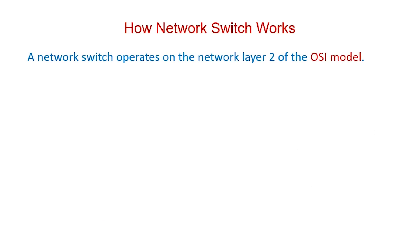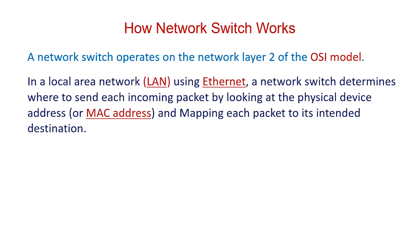A network switch operates on network layer 2 of the OSI model — we will cover what the OSI model is in later videos. In a local area network using Ethernet, a network switch determines where to send each incoming packet by looking at the physical device address, or MAC address, and mapping each packet to its intended destination.